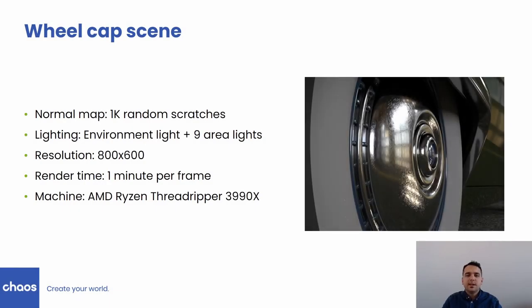Our second scene is a scratched metal wheel cap. The dominant low-frequency illumination comes from the environment, and 9 small area lights are also added. The benefit of our filtering method is observed mainly at the reflection of these 9 lights, and again diminishes for increased roughness.